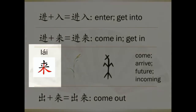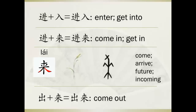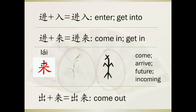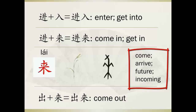The zi 来 (lái): L reads 'le', ai reads 'ai', so together: lái. 来's original meaning was 'wheat' — look at its jiaguwen form, it looks like wheat. But today it has lost that meaning. It now means come, arrive, future, or incoming.